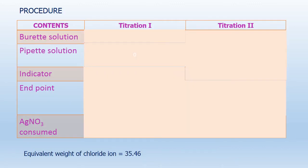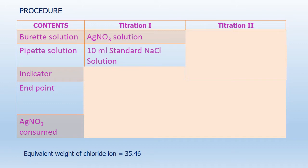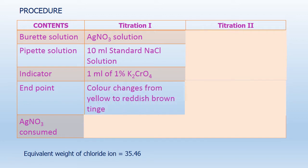Let us see the simple procedure. The burette solution for Titration 1 is silver nitrate solution. The pipette solution is 10 ml of standard NaCl solution. The indicator is 1 ml of 1% potassium chromate solution. The endpoint color changes from yellow to reddish brown tinge.